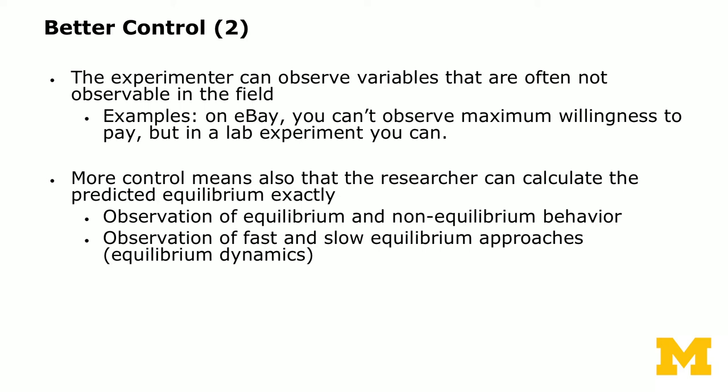The experimenter can also observe variables that are often not observable in the field. For example, when you look at eBay data, you cannot observe the maximum willingness to pay from a bidder, but in a lab experiment you can. More control also means the researcher can calculate the predicted equilibrium exactly, and observe both equilibrium and non-equilibrium behavior, as well as equilibrium dynamics — how fast or slow people converge to the equilibrium prediction. We'll use an example of first-price auctions to theoretically compute the equilibrium, and then give you a dataset as part of your homework so you can examine whether behavior conforms to the theoretical prediction.